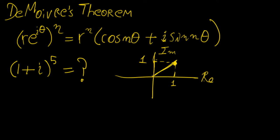What's going to be the angle between this and the real axis? It has to be 45 degrees, which is the same as pi over 4 radians.